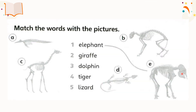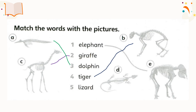For the second activity, you would need to match the words with the picture. For example, number one — elephant. Which picture shows the skeleton of an elephant? It is E, so you're going to draw a line to E. How about a giraffe? Very good, it is C. How about dolphin? Very good, it's A. Which skeleton is the skeleton of a tiger? Well done, it's skeleton B. Last one — which skeleton is the lizard's skeleton? Good job — it's skeleton D.